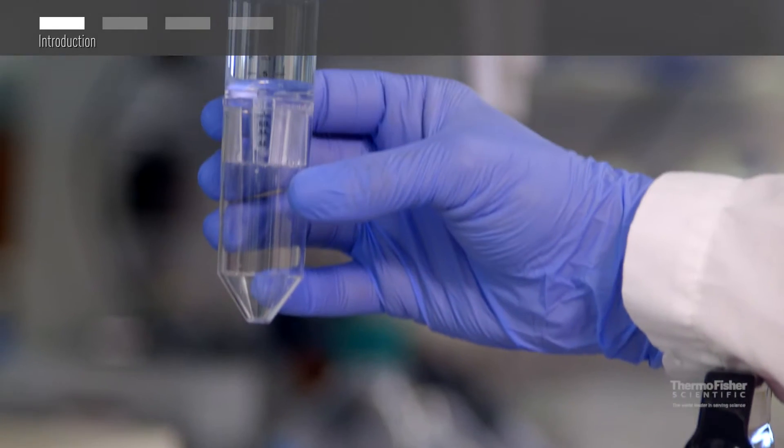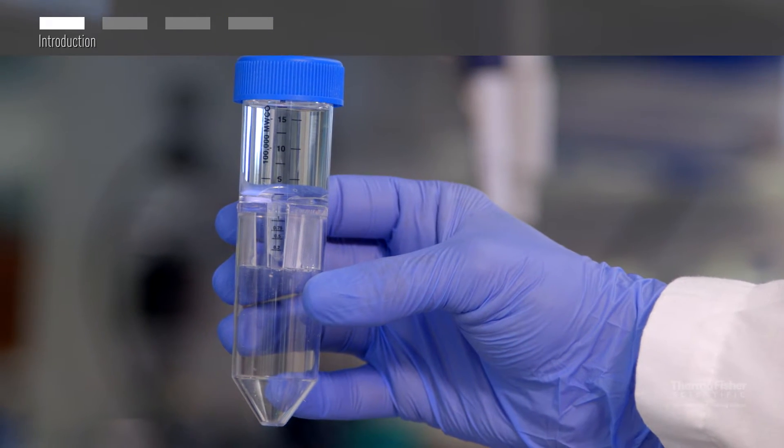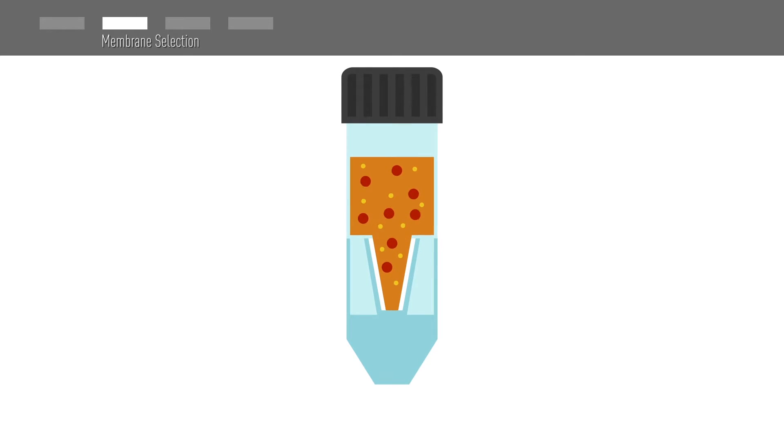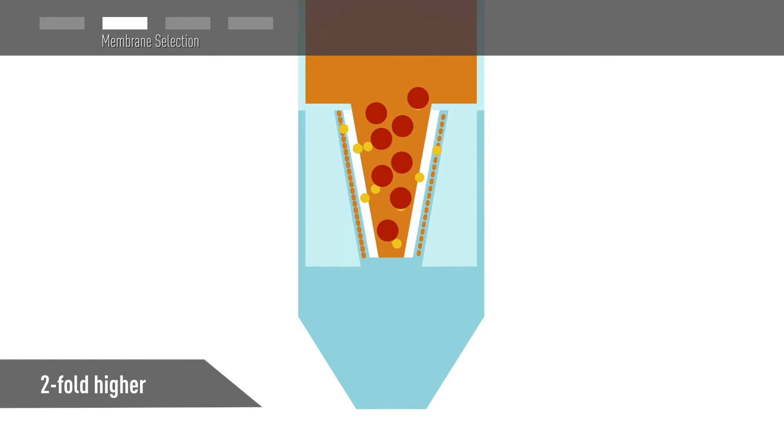The cutoffs are etched on the side of each device for easy identification. Membrane selection will depend on the size of your protein. PES membrane will retain proteins and other molecules with a molecular weight that is at least two-fold higher than the molecular weight cutoff.